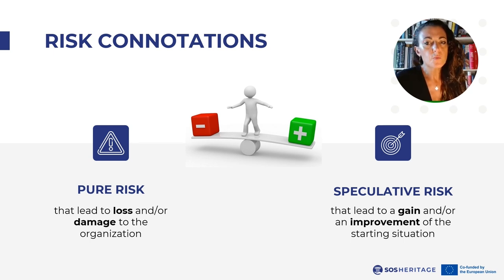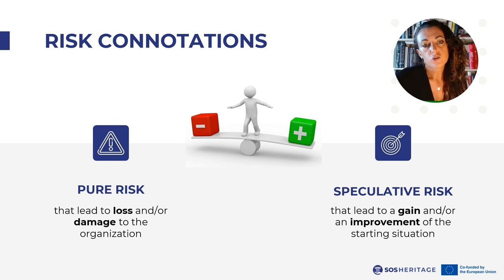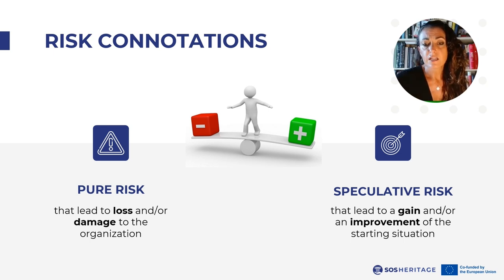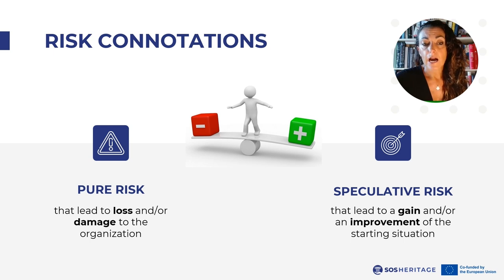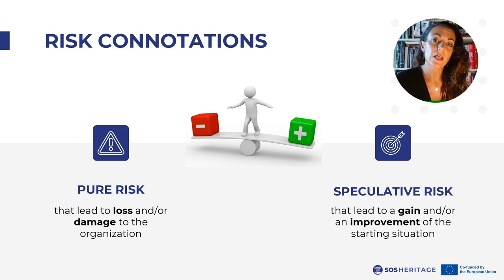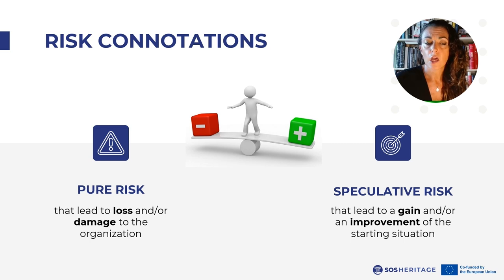There are two main types of risk connotation. On one hand, a pure risk that leads to loss or damage to the organization. On the other hand, a speculative risk that leads to a gain or an improvement of the starting point. Our main objectives as risk managers would be to identify all risks, manage them and turn them into a positive opportunity for our organization. To do so, risk management tools need to be applied.